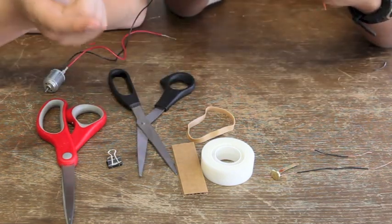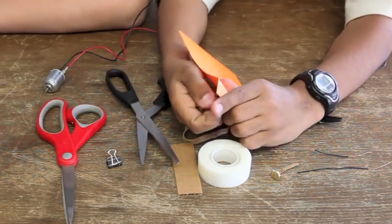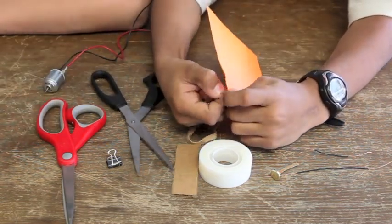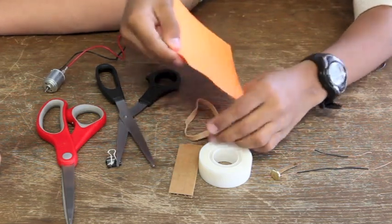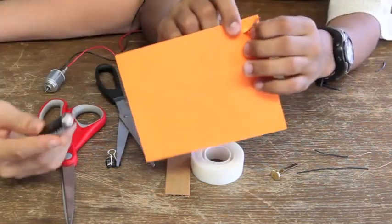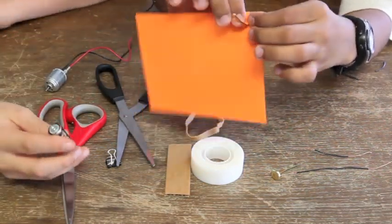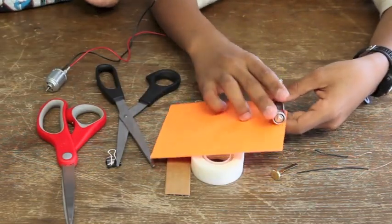And then you take the fasteners, put a hole in it from the other side of the battery. Here is the fastener. We are making a battery holder right now.